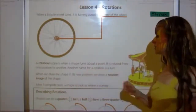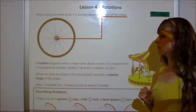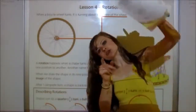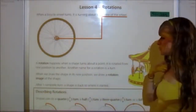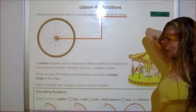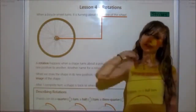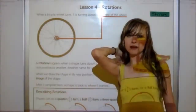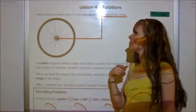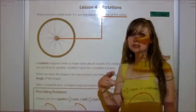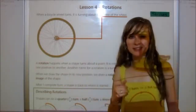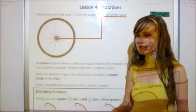A rotation happens when a shape turns about a point — you have to have a point, and then it has to turn on that point. It is rotated from one position to another. Another name for a rotation is a turn. So we have a flip, which is a reflection, and now we have a turn, which is a rotation. And then the other one was a slide, the translation.